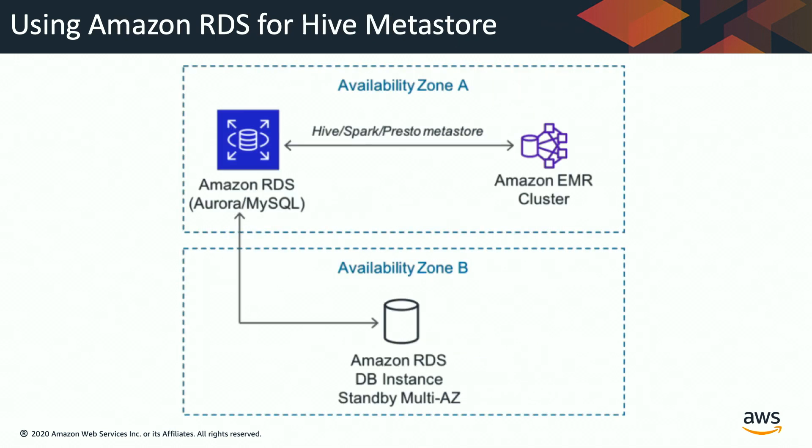When using Amazon RDS or Amazon Aurora to store your Hive Metastore, this is the typical architecture: you maintain replications to avoid a single point of failure. You run RDS in one availability zone with replication in another availability zone, so if you lose one AZ, you can bring up the snapshot from the other AZ and maintain availability.